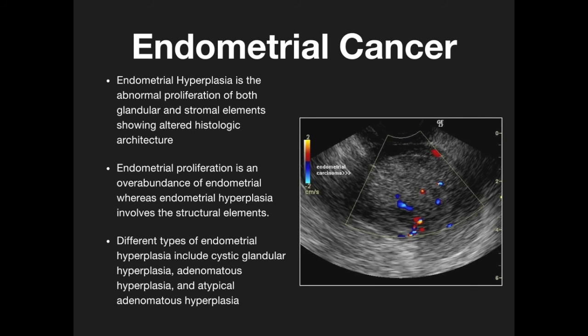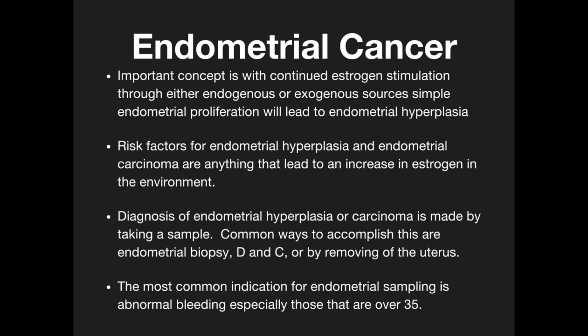Endometrial hyperplasia is abnormal proliferation of both the glandular and stromal segments, showing altered histologic architecture. Endometrial proliferation is an overabundance of endometrial tissue, whereas endometrial hyperplasia involves the structural elements. Different types include cystic glandular hyperplasia, adenomatous hyperplasia, and atypical adenomatous hyperplasia. Continued estrogen stimulation, either endogenous or exogenous, will lead simple endometrial proliferation to progress to endometrial hyperplasia.